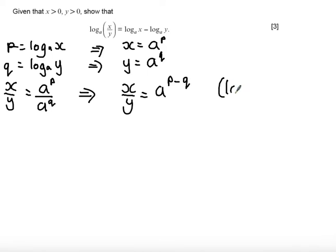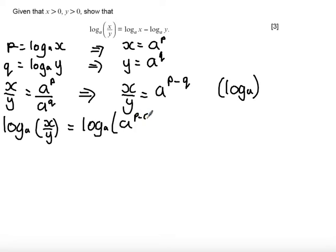Now if I take log base a of both sides, I get log base a of x over y is equal to log base a of a to the power of p minus q. Now log base a and a to the power of something are inverse functions. So this leads to log base a of x over y being equal to p minus q.